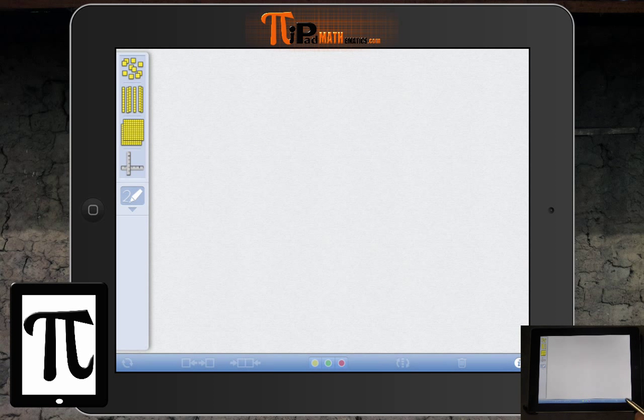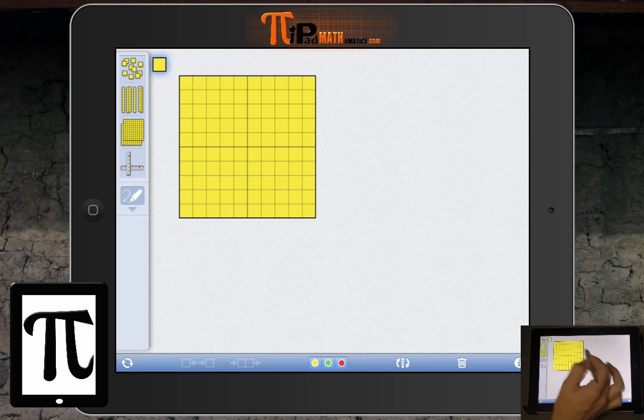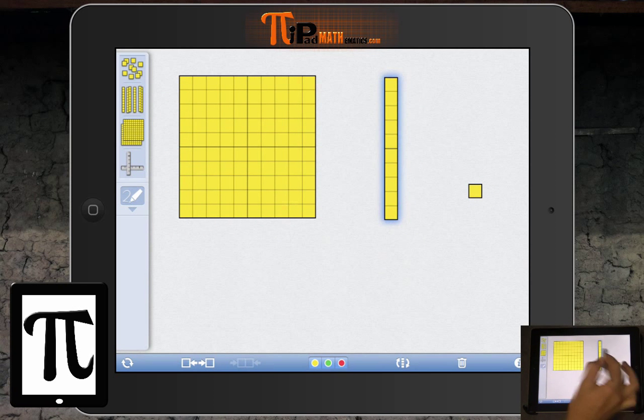With base ten blocks, here's a unit, and here's a long, and here is a flat. Now the unit we can say equals one.